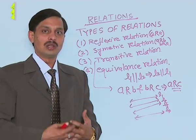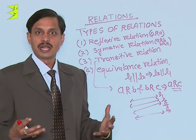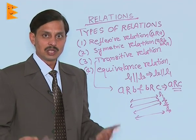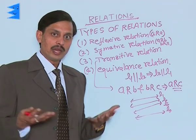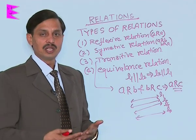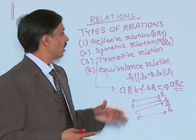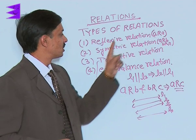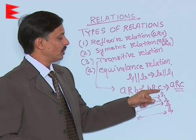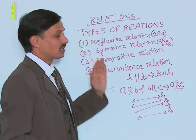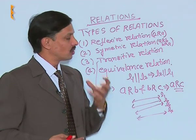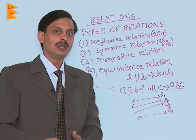In summary: if we have set A, we obtain the Cartesian product, and each subset of A cross A is a relation. If the entire set is taken it is the universal relation, if no element is taken it is the void relation, if only repeated pairs are taken it is the identity relation. If the relation holds with itself it is reflexive, if the reciprocal is also true it is symmetric, if A related to B and B to C implies A related to C it is transitive, and if all three hold it is the equivalence relation. This is the theme of the topic of relations.